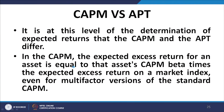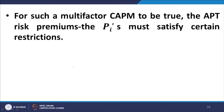We now return to the CAPM versus APT relationship. It is at the level of determining expected returns that the two models differ. In the CAPM, the expected excess return for an asset equals that asset's CAPM beta times the expected excess return on a market index, even for multi-factor versions. For such a multi-factor CAPM to be true, the APT risk premia must satisfy a certain relationship between the APT p_j's and the CAPM betas.